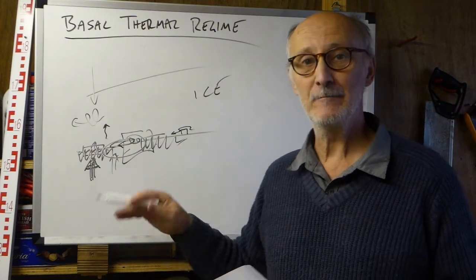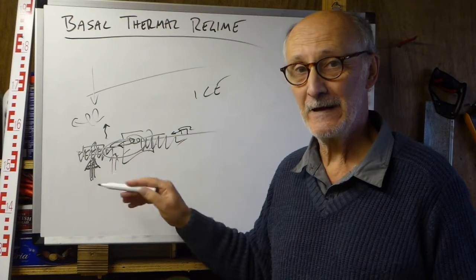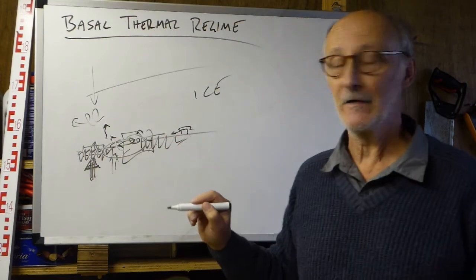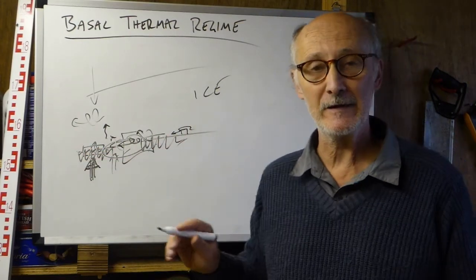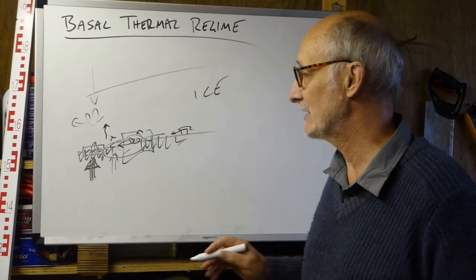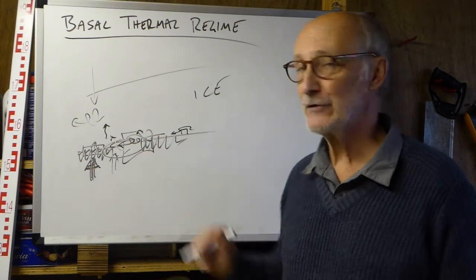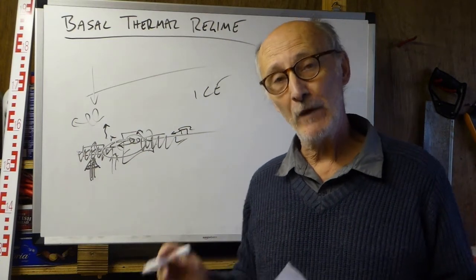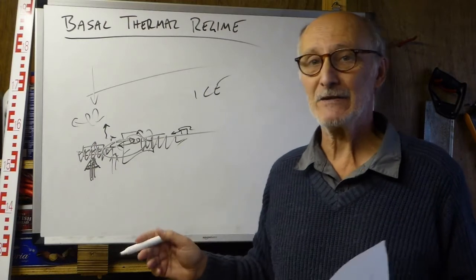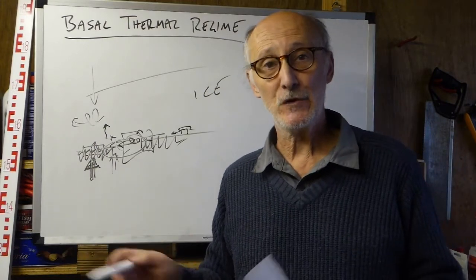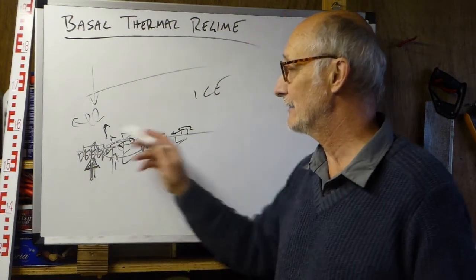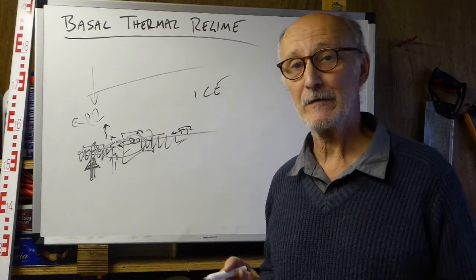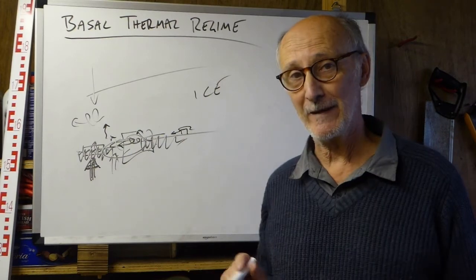If there's a geography of basal thermal regime, that's going to lead to a geography of geomorphology. We have a geography of basal thermal regime leading to a geography of basal processes, and that's going to lead to our geography of geomorphology. So one of the major controls fundamental to the geography of landforms and landscapes is the geography of the basal thermal regime, and that's why the basal thermal regime is really important for us to be talking about at this stage in the module.